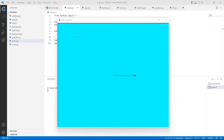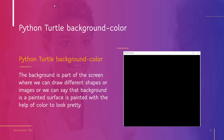Now let's move forward and discuss Python Turtle Background Color. The background is a part of the screen where we can draw different shapes or images. We can say that the background is a painted surface with the help of color to look pretty. If the background looks pretty, our shapes also look pretty.